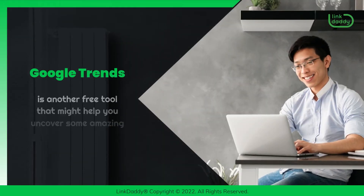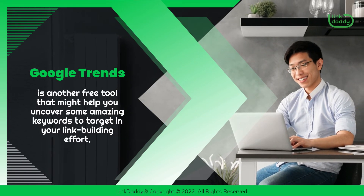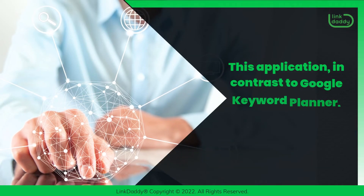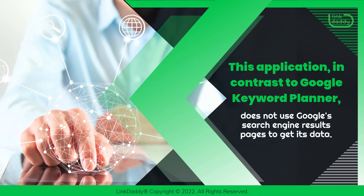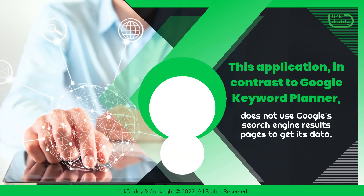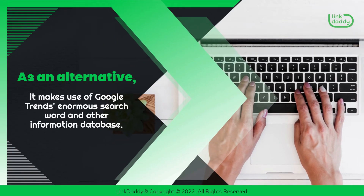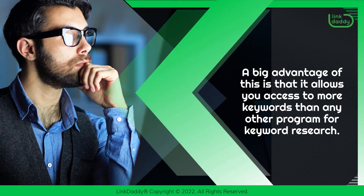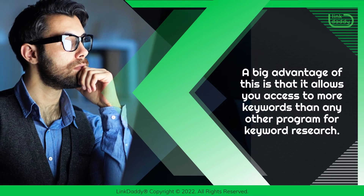Google Trends is another free tool that might help you uncover some amazing keywords to target in your link building effort. In contrast to Google Keyword Planner, it does not use Google's search engine results pages to get its data. Instead, it makes use of Google Trends' enormous search word and other information database. A big advantage of this is that it allows you access to more keywords than any other program for keyword research.